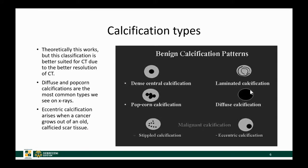Most nodules we see on chest x-ray are calcified, and you can try to further characterize the calcification pattern. The easiest is diffuse calcification, where the nodule is homogeneously white. A central calcification or popcorn type may not be too difficult to pick up. A laminated type is quite difficult and you would probably only appreciate it on CT. Malignant types of calcification are the stippled calcifications and the eccentric types.